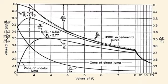The maximum relative sequent depth, Y sub 2 over E sub 1, is 0.8 at F sub 1 equal 1.73. Experiments show that the transition from undular to weak jump occurs at this value of upstream Froude number F sub 1 equal 1.73.